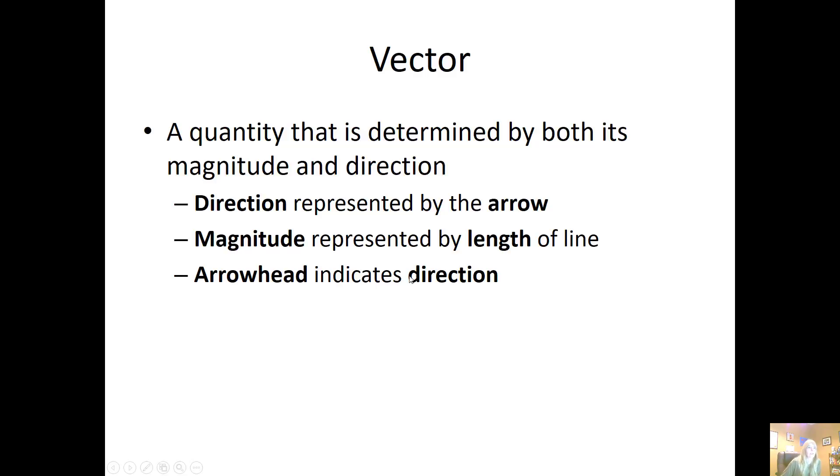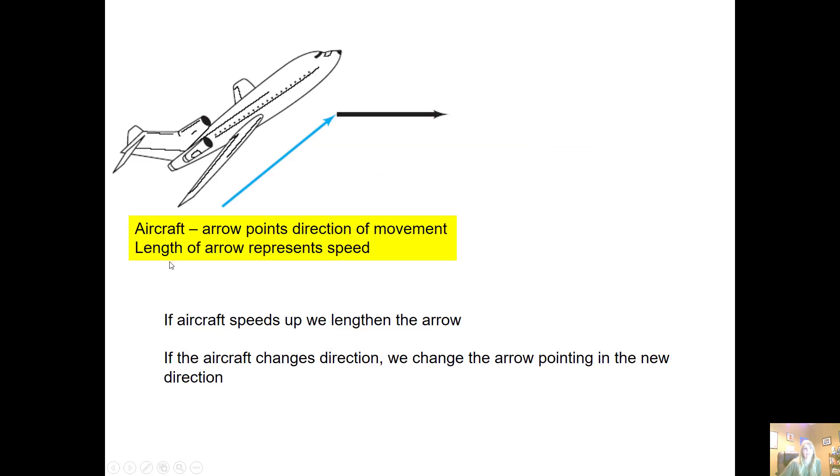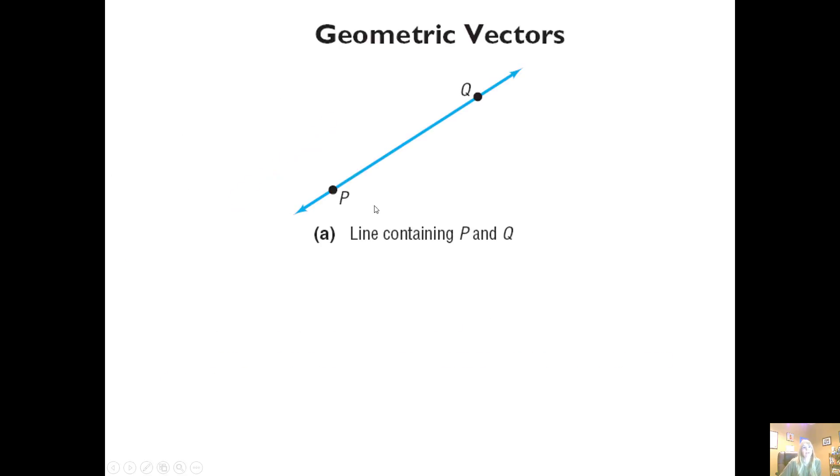So Vector: direction and magnitude. A vector is a quantity that is determined by both its magnitude and direction. The direction is represented by an arrow, the magnitude is represented by the length of the line. The arrowhead indicates the direction. For example, an aircraft where the arrow points the direction of movement and the length shows the magnitude or speed.